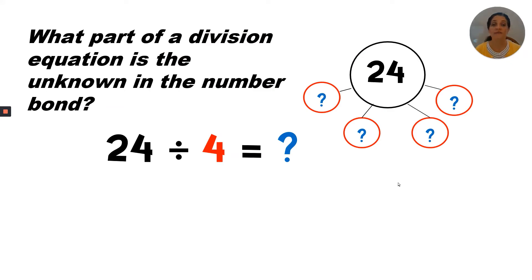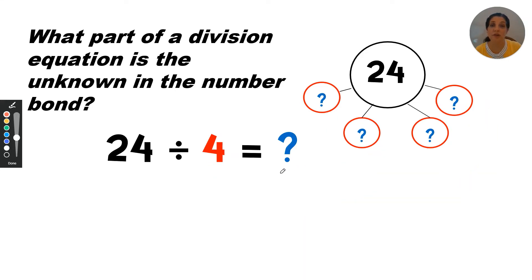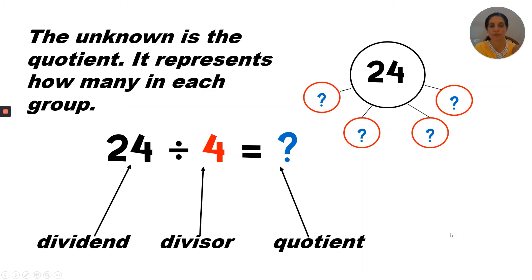What part of a division equation is the unknown in the number bond? We know that there are 24 in all, and we know that there are one, two, three, four groups. We want to know the unknown, and that is in the place of the quotient. We know that the quotient is always how many in each group. The unknown is the quotient — it represents how many in each group.